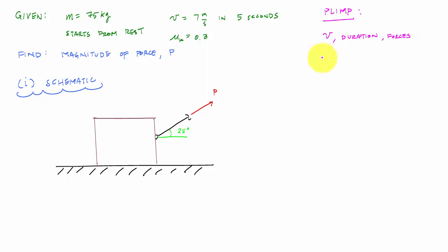That principle of linear impulse and momentum is MV1 plus the sum of the impulses, which is this integral from T1 to T2, the external force DT equals the momentum at stage two. And this whole term right here is the impulse. And what we want to do is come up with a schematic that reflects the principle of linear impulse and momentum.